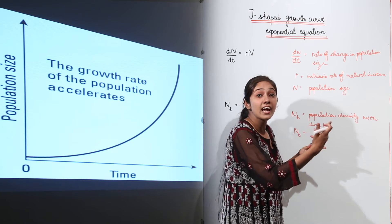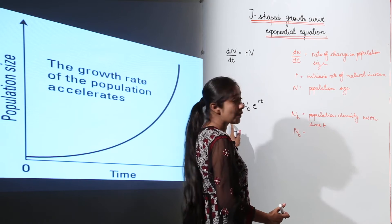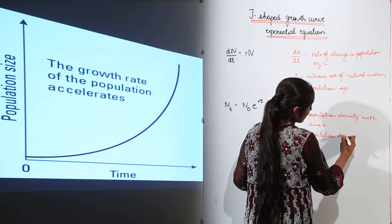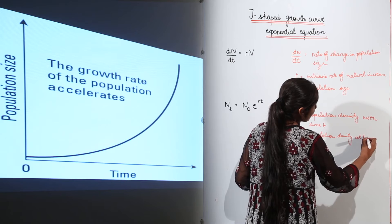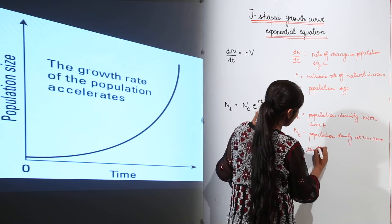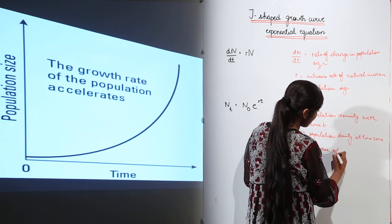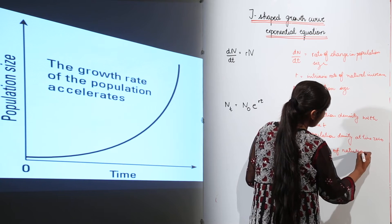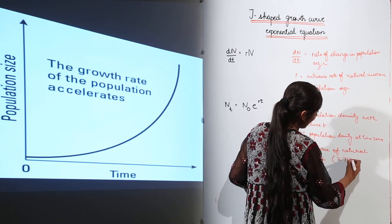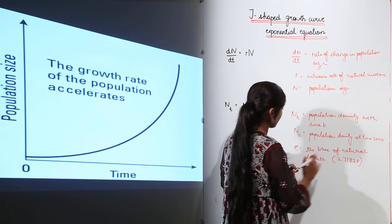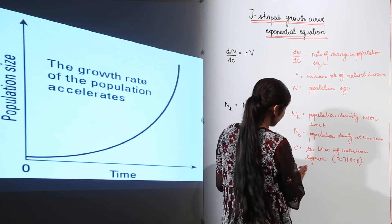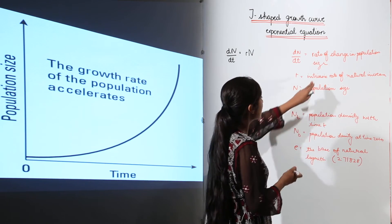N0 is population density at time 0. The e is the base of the natural logarithm, and its value is 2.71828. And r, as you already know, is the intrinsic rate of natural increase.